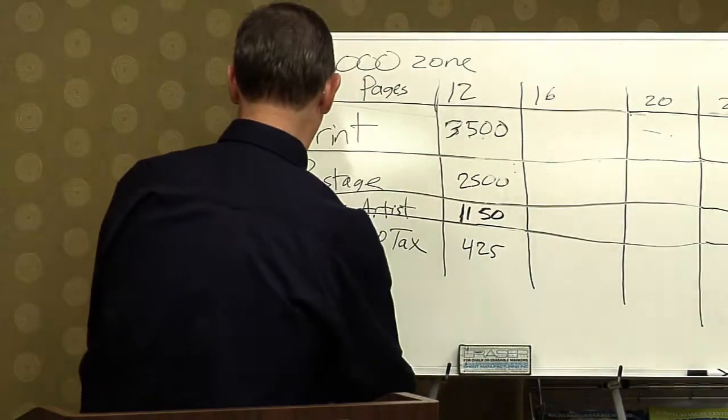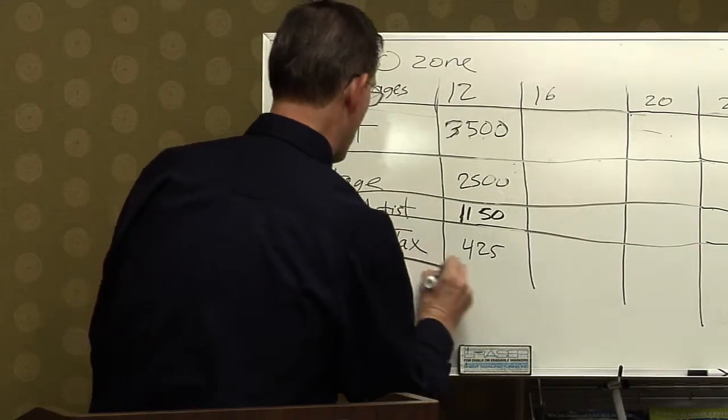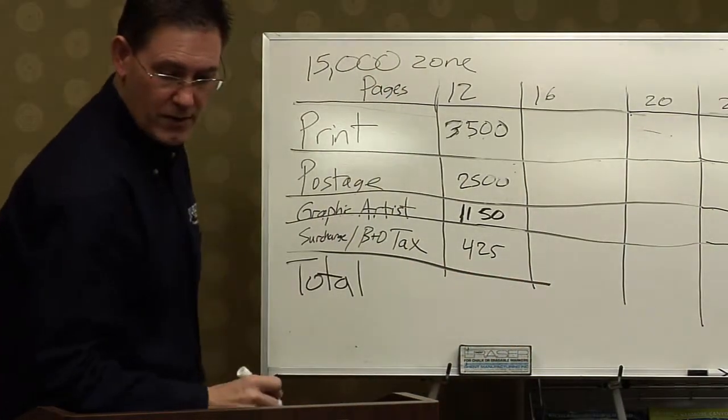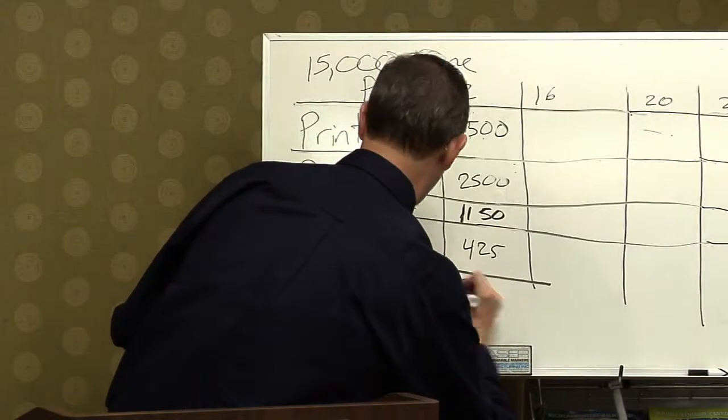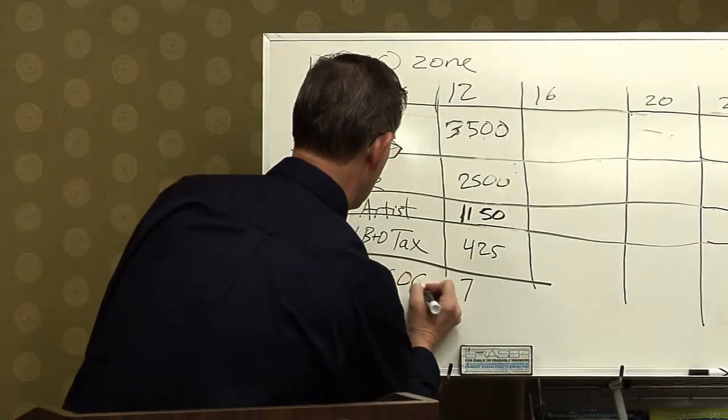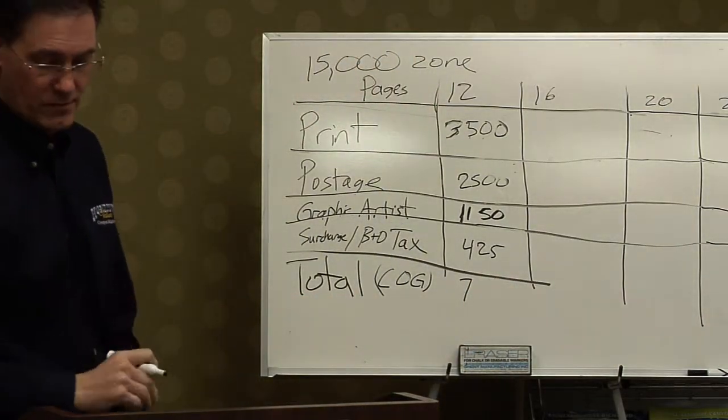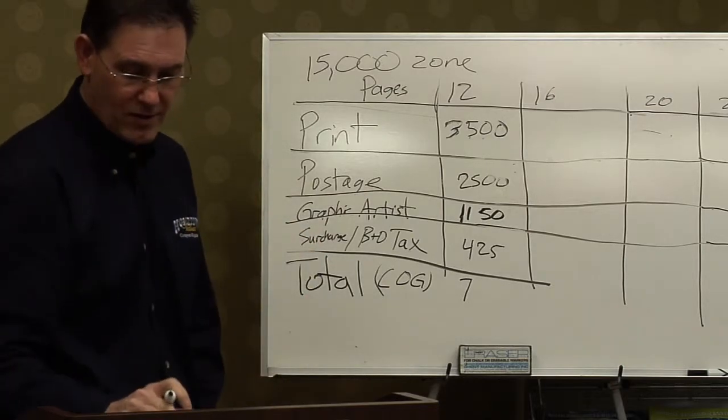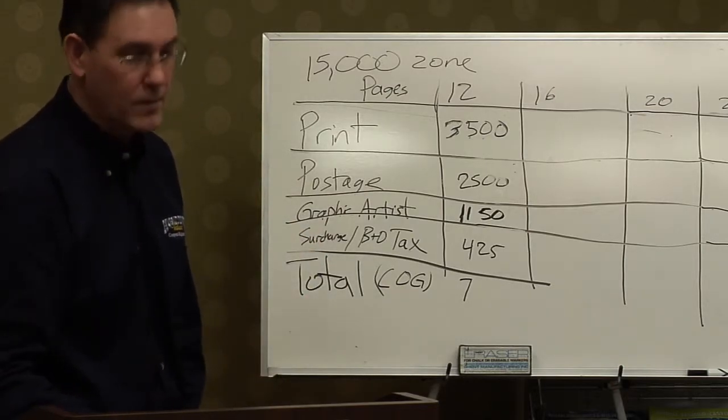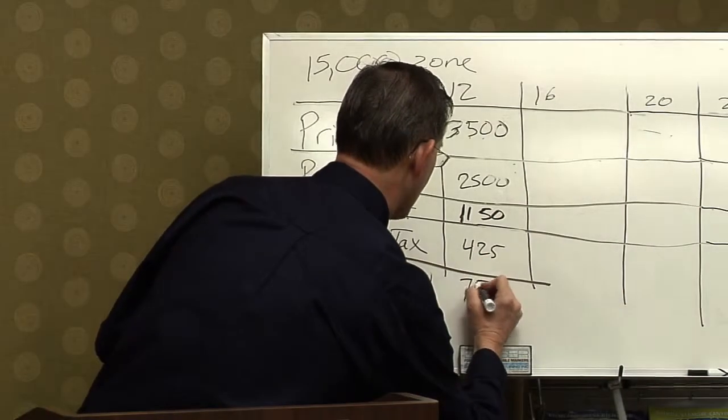So the total for the cost of your book for 12 pages is going to be somewhere around $7,500. That's for your cost of goods. That surcharge is only for the Washington State APs, by the way. So that will vary a little bit.